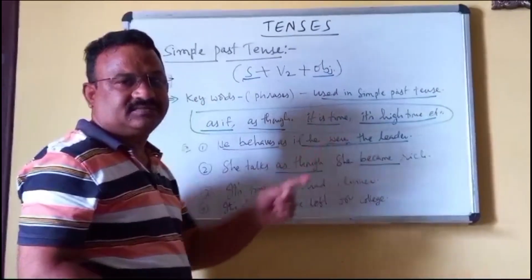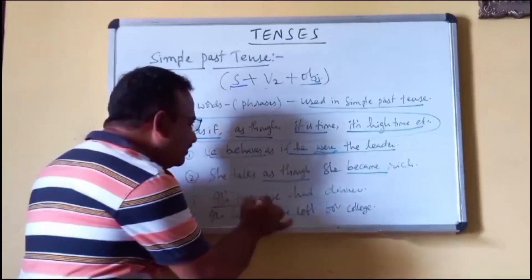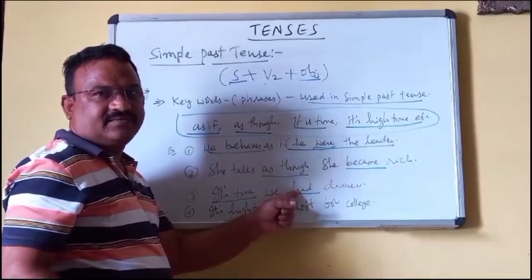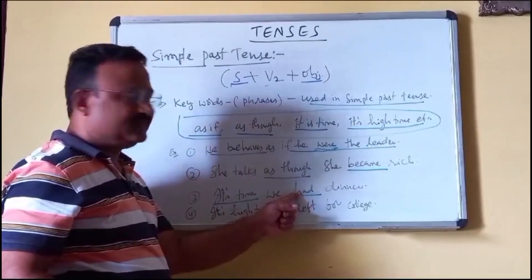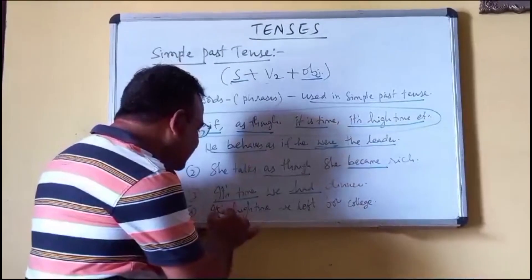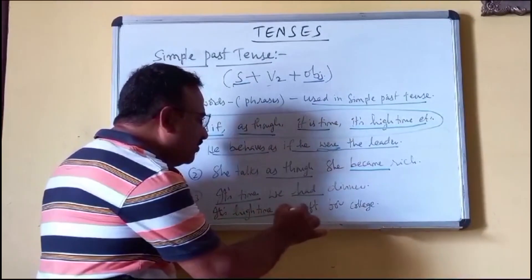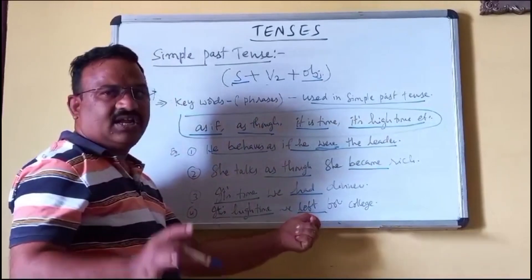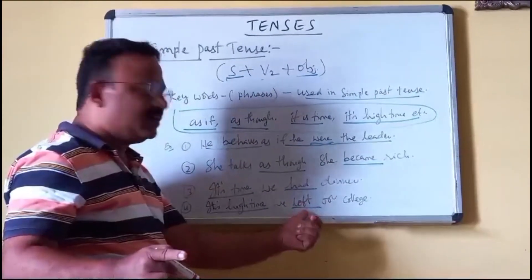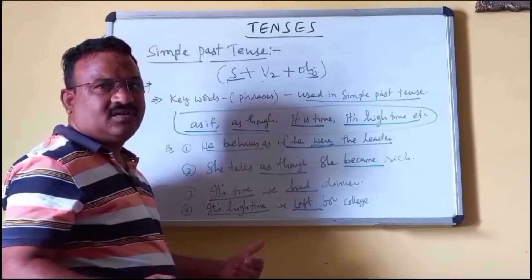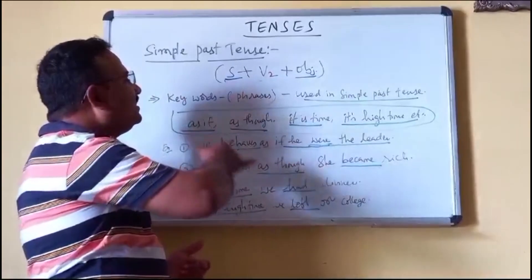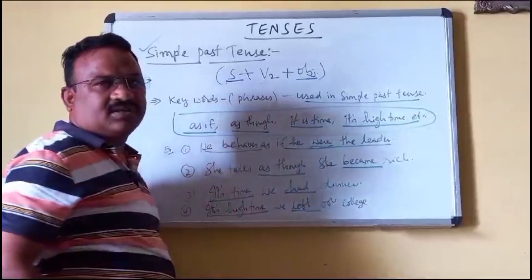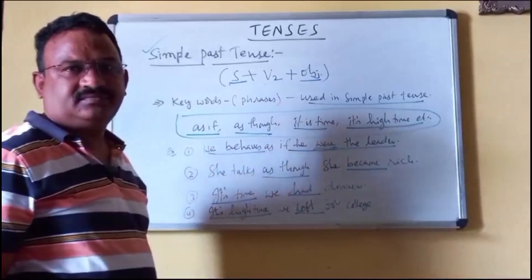'It's time we had dinner' — 'had' is past tense. 'It's high time we left for college' — 'left' is the V2 form of 'leave.' In these cases we have to use simple past tense. Thank you.